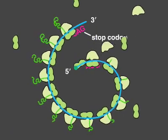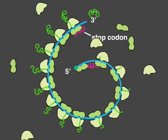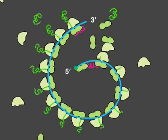When a ribosome reaches a stop codon, the ribosome and the new protein dissociate from each other and from the mRNA.